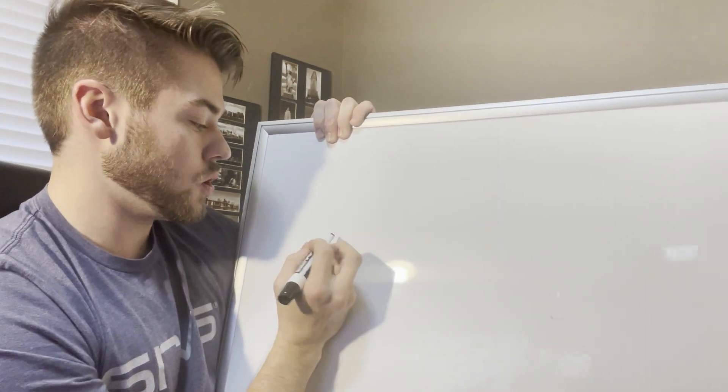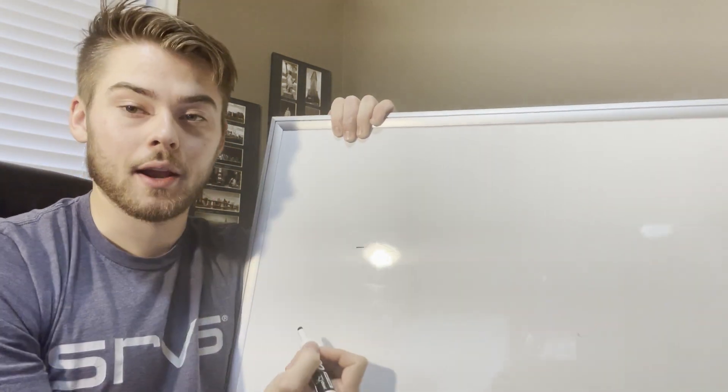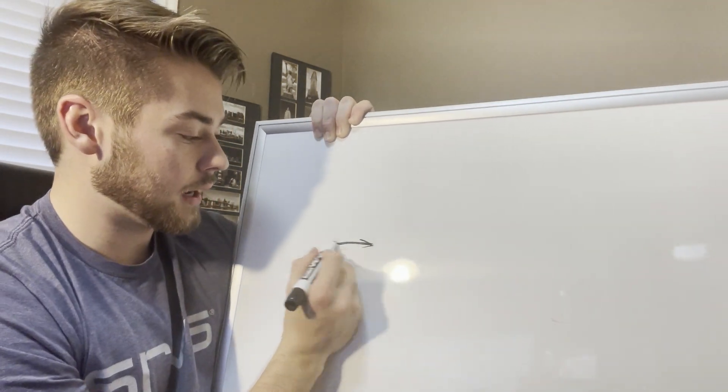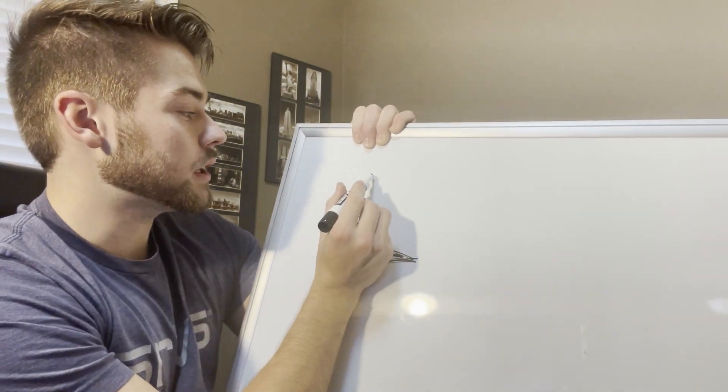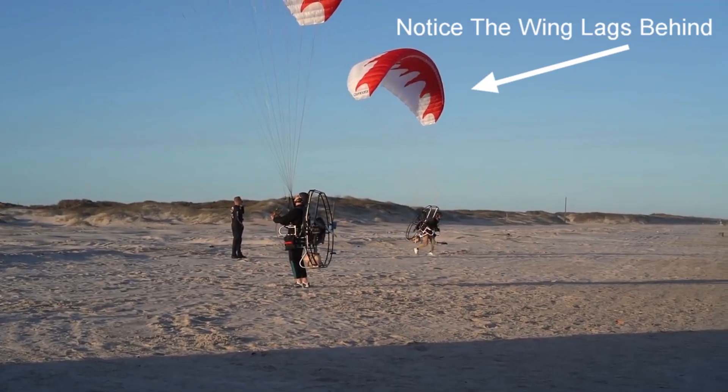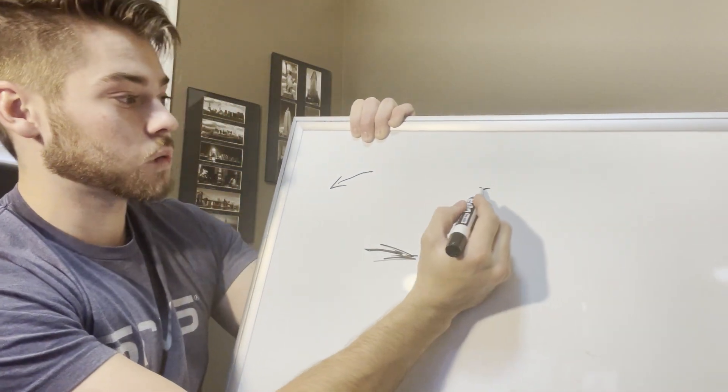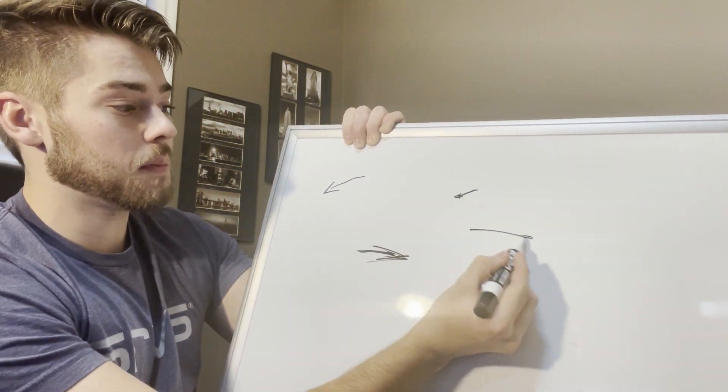When you're going to launch your paramotor, you obviously take off running. When you take off running like this guy right here, what happens to your glider? Well, originally, it falls behind you like this because all of a sudden you're forcing it this way. It's back here when you're up here.